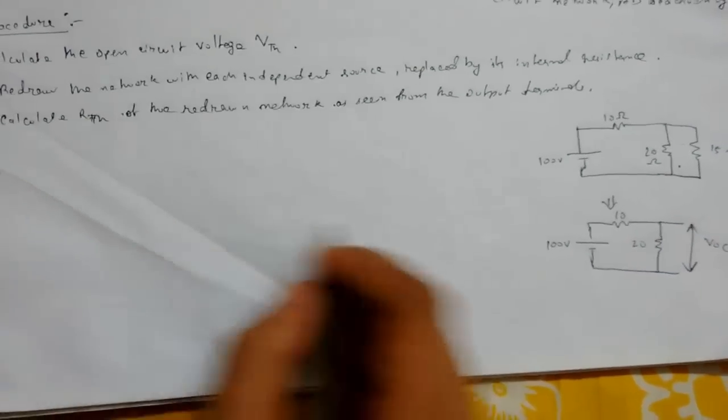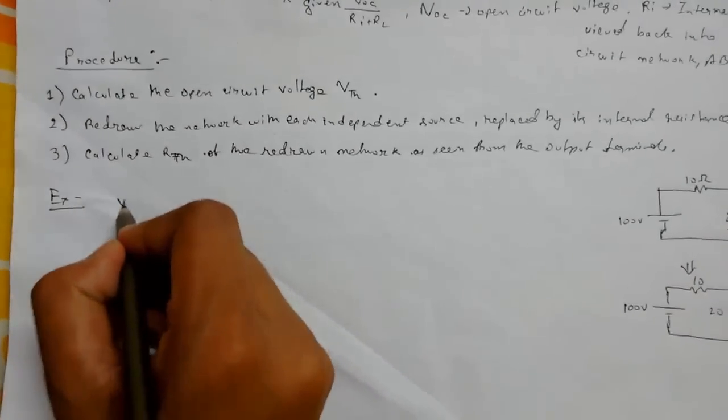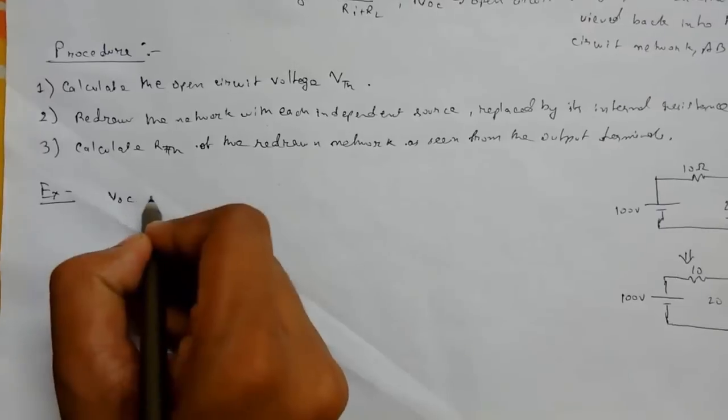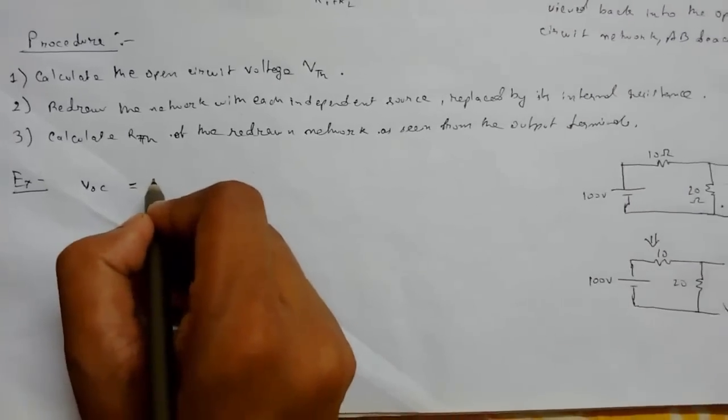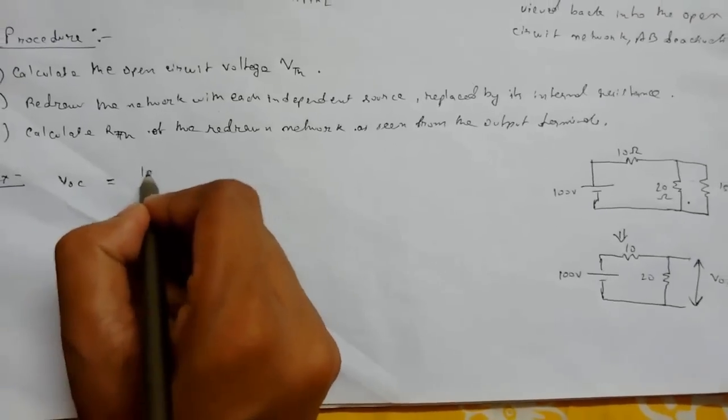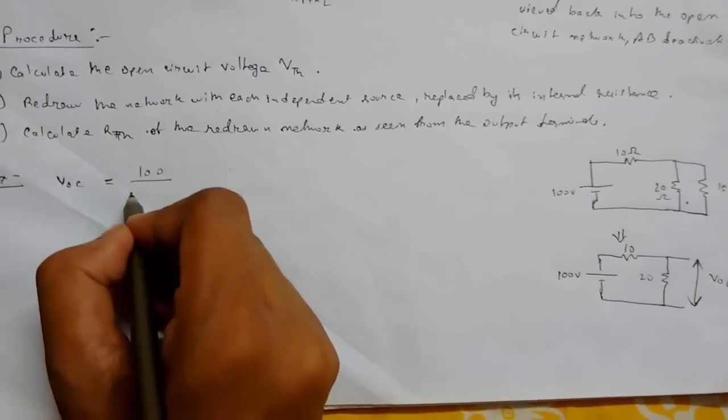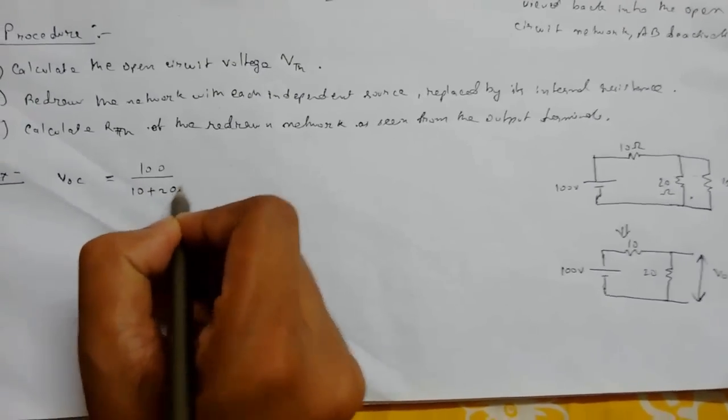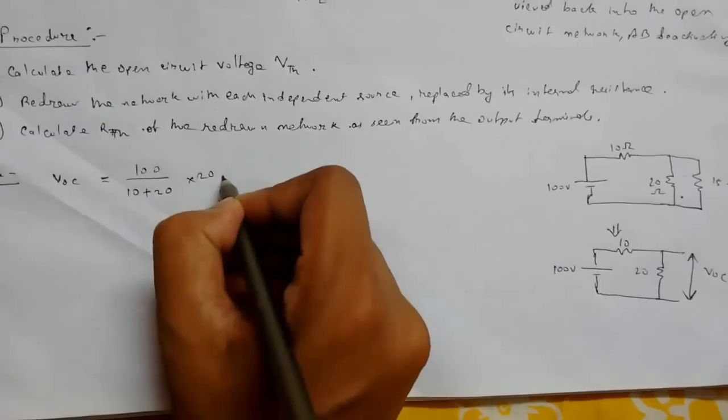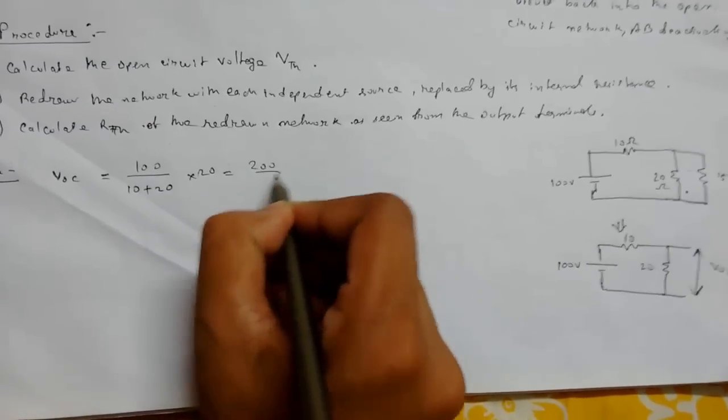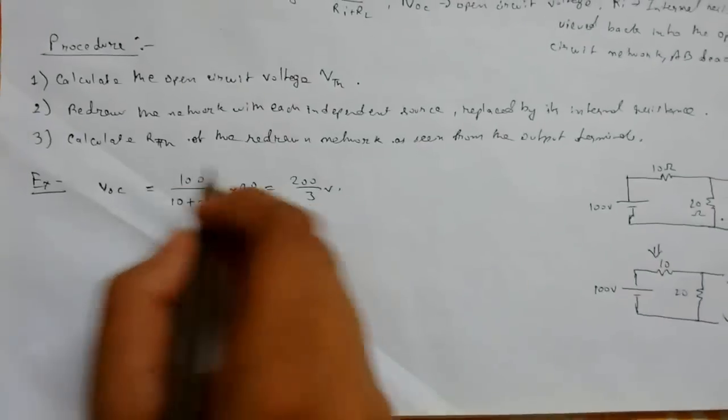This will be the open circuit voltage. Now we can see VOC, that is our open circuit voltage, will be 100 upon (10 plus 20) into 20. So this is 200 by 3 by the voltage divider rule.